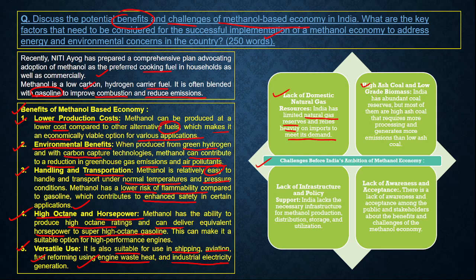The second challenge is high ash coal and low-grade biomass. India has coal reserves in Jharkhand, Odisha, and West Bengal, but most of it is high ash coal — including lignite deposits — which requires more processing and generates more emissions than low ash coal.